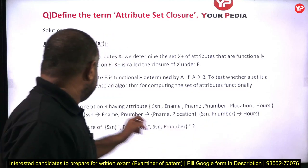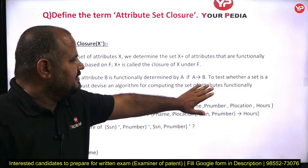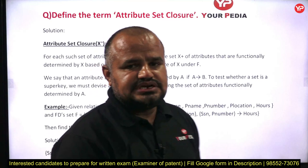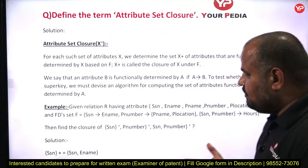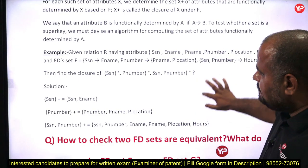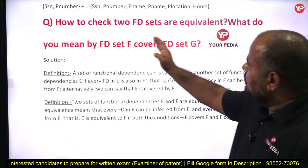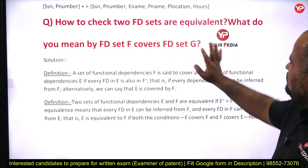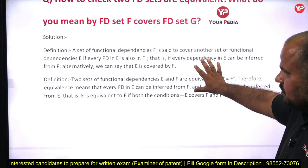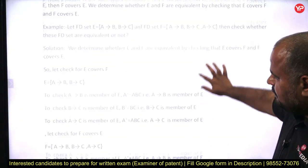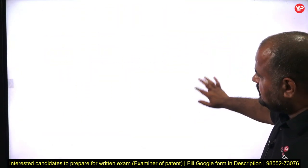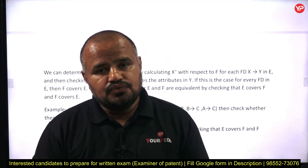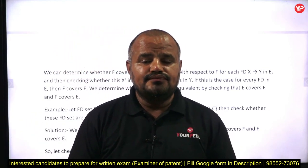We say that an attribute B is functionally determined by attribute A if A determines B, or A uniquely determines B. To test whether a set is a super key, we must devise an algorithm for computing the set of attributes functionally determined by that set. That is why we use attribute set closure to calculate the super keys of our relations. Similarly, to check two FD sets are equivalent, we define what FD set F covers G and FD set G covers F means.